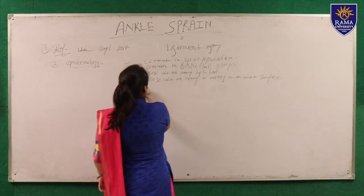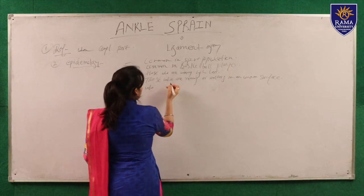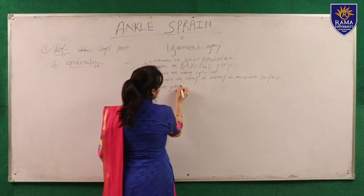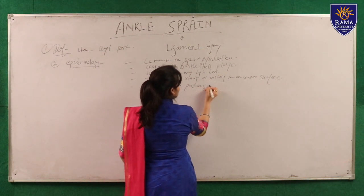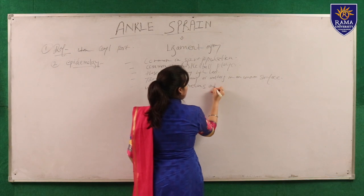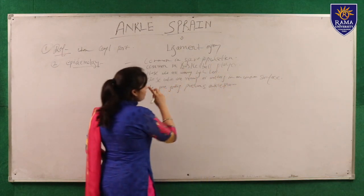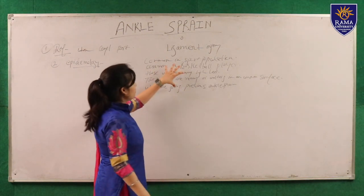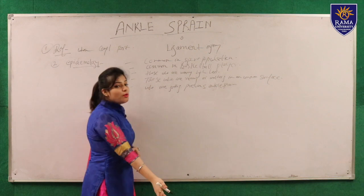In summary, ankle sprain is commonly seen in those who have had a previous ankle sprain, and it is very common in the sports population.